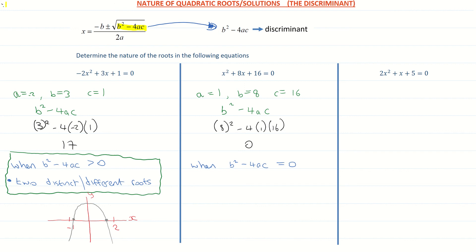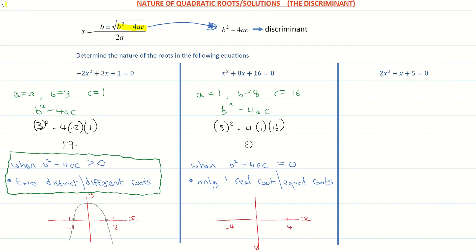In the first example we had greater than 0, meaning two distinct roots. When the discriminant equals 0, we have just one real root — equal roots, touching the same point. On the coordinate graph, x squared plus 8x plus 16 is a positive parabola that touches the x-axis at exactly one point. It tells us the nature of the roots: just one real equal root.